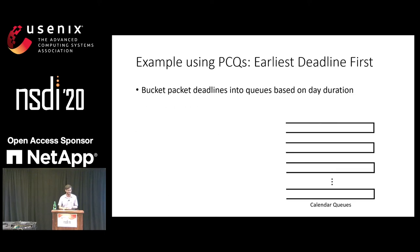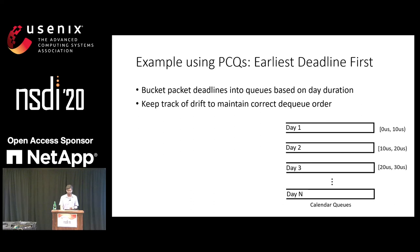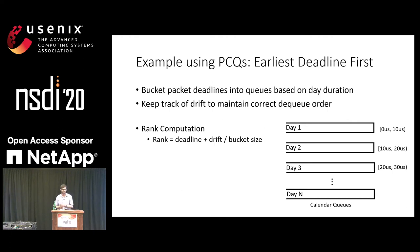Let's look at a more complex example: earliest deadline first, where every packet has an inbuilt deadline and you want to select the packet with the shortest deadline first. Here, we bucket individual packet deadlines into queues based on day duration. For example, 0 to 10 microsecond deadlines go into day one, 10 to 20 into day two, and so on. In addition, we keep track of a drift value, which is the position of our current head relative to the calendar queue head. The rank computation is simply the packet deadline plus the drift, divided by the bucket size of 10 microseconds. To preserve the work-conserving nature, we rotate to the next queue whenever the current queue is empty.